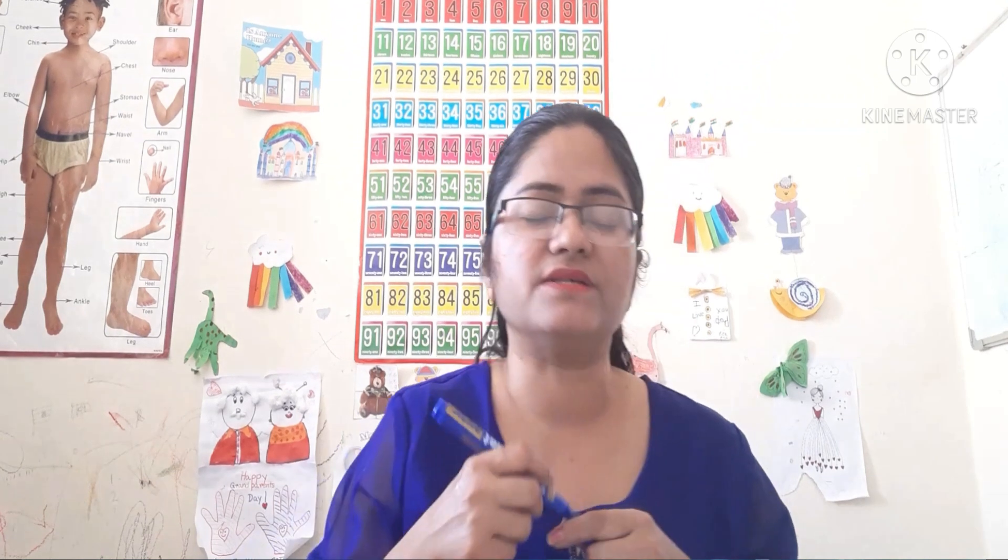Again, 1 plus 5. If I raise my 5 finger — which one is my 5 finger? The thumb on the right hand represents number 5. So if I raise the thumb, this is 5. Then 5 plus 1 — again I raise 1 finger. So what is the number? 6. So 1 plus 5 is equal to 6.